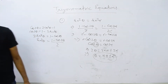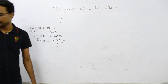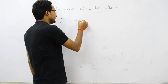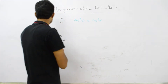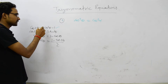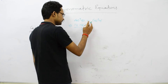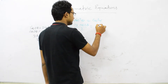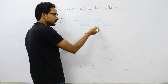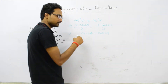Let us see the second case: cos²θ = cos²α. We use the formula cos²θ = (1 + cos 2θ) / 2. So we write (1 + cos 2θ) / 2 = (1 + cos 2α) / 2. The 2s cancel, the 1s cancel, and we get cos 2θ = cos 2α — the same pattern.